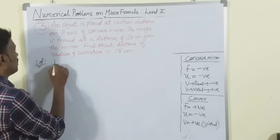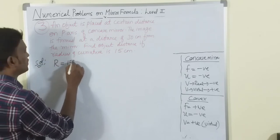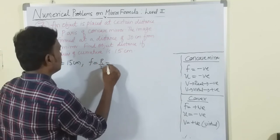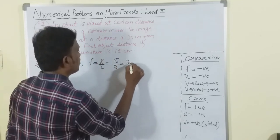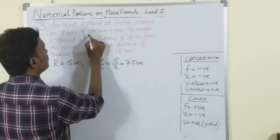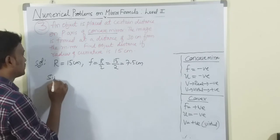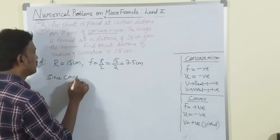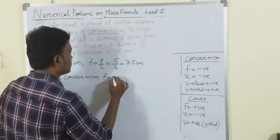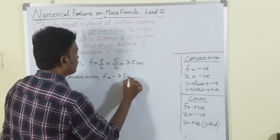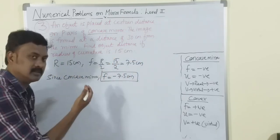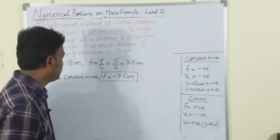Given r = 15 cm, so f = r/2 = 15/2 = 7.5 centimeters. Since it is a concave mirror, f = -7.5 centimeters. Here u is not given - we have to find u.